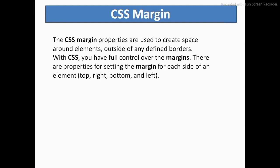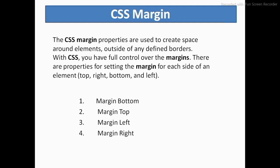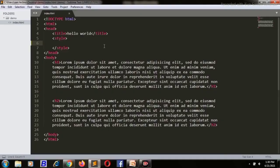There are properties for setting the margin for each side of an element: top, right, bottom, and left. I will show you five things we need to know about margin: first is margin-bottom, second is margin-top, third is margin-left, fourth is margin-right, and last is margin-auto. So let's go to the editor and start.